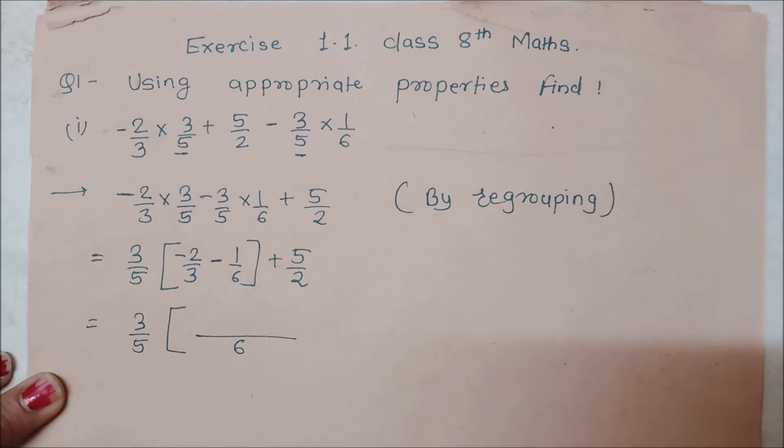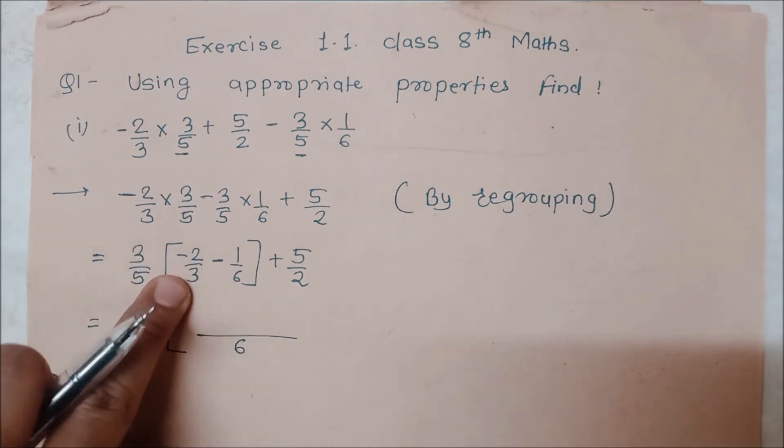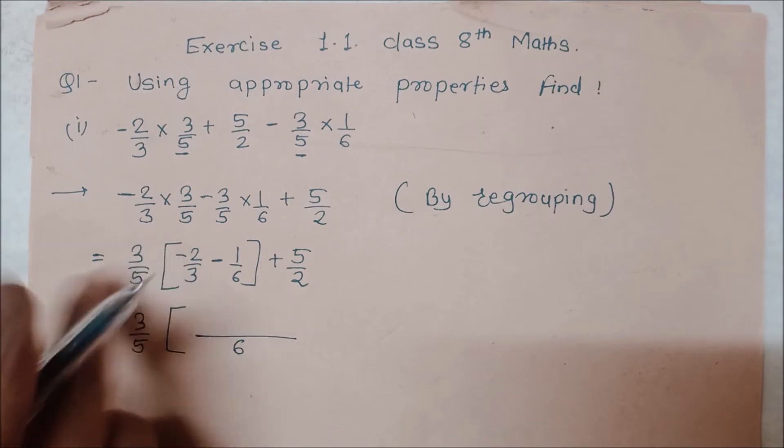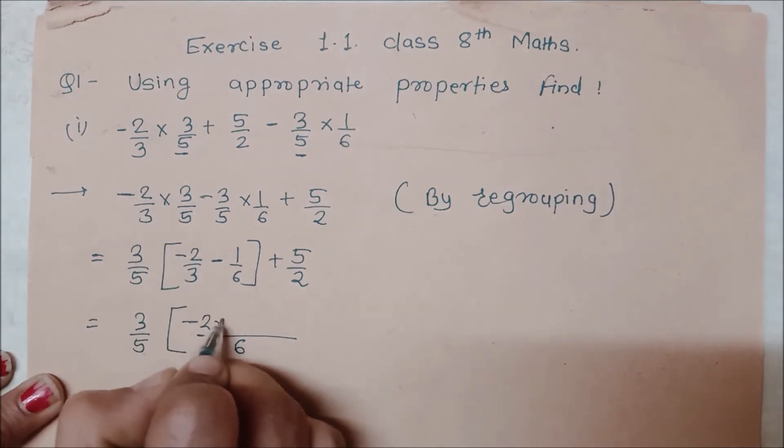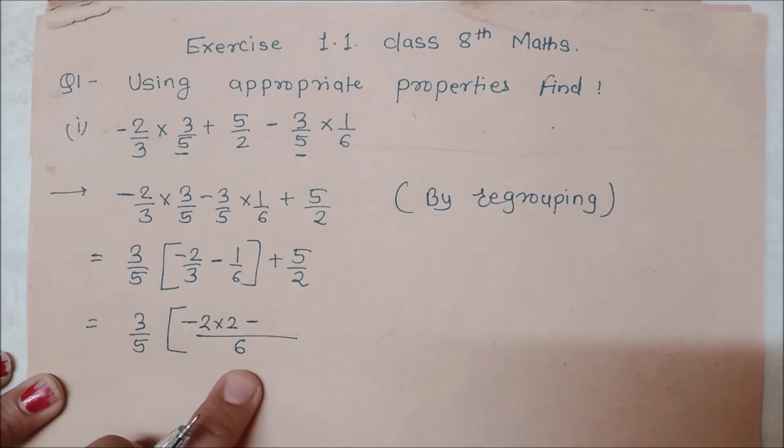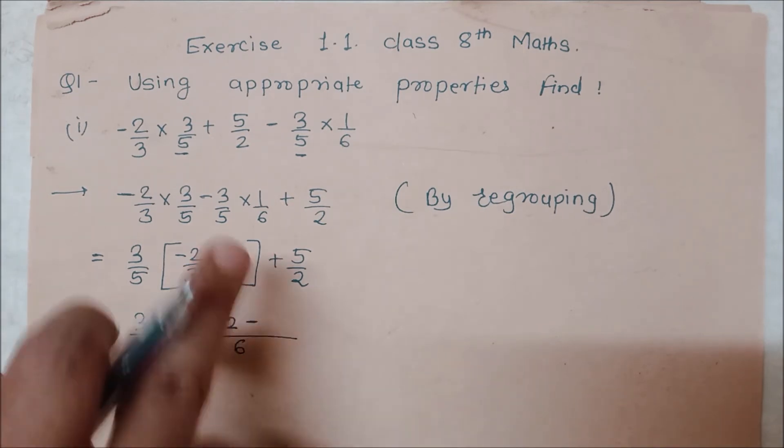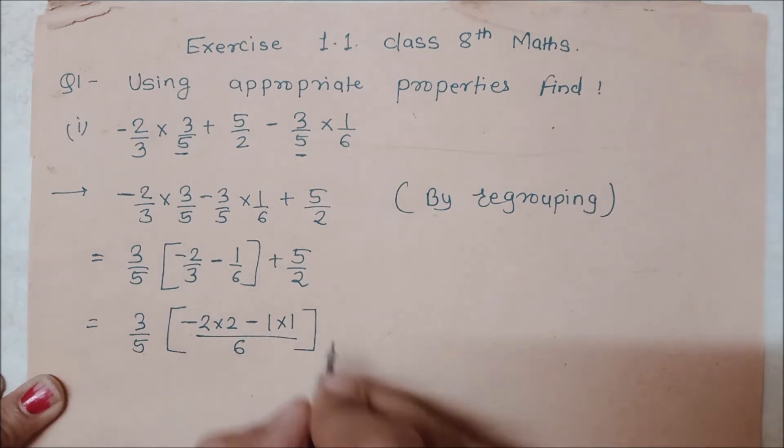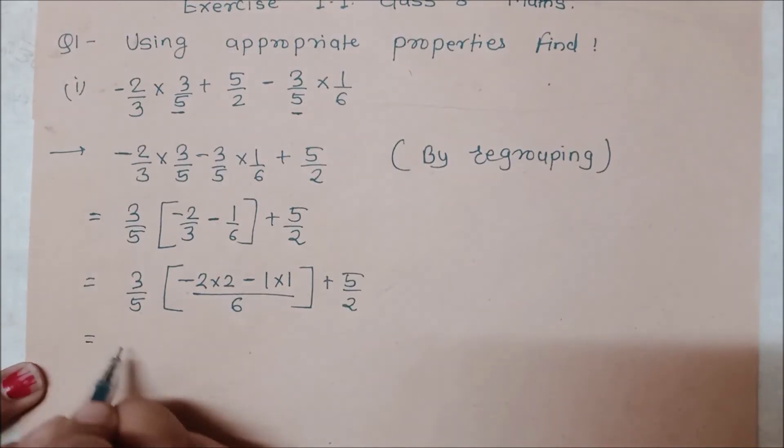We will multiply 2 by 2 to get 4. Here, we will multiply by 1 to get 1. So what will we get? Minus 2 times 2 is minus 4, minus 1 times 1 is minus 1. This will be upon 6.